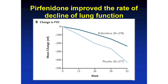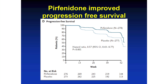Finally, with time on the x-axis and mean change in forced vital capacity on the y-axis — a measure of how big your lungs are — the lighter plot is placebo and the darker plot is pirfenidone. Patients who got pirfenidone, the anti-fibrotic drug, had a lower decline in their lung function, meaning lung function did not decrease as much as it would have had they not received the drug.